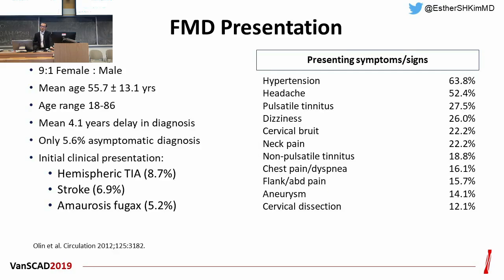This slide summarizes FMD presentation from the US FMD registry. FMD is diagnosed predominantly in females — 9 to 1 — and the mean age at the time of diagnosis was 55 years, ranging from 18 to 86. Only 5% of patients are diagnosed at an asymptomatic phase.